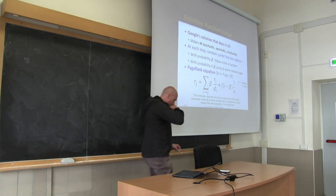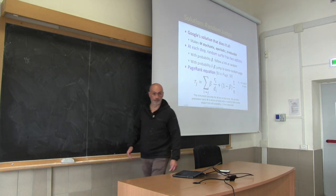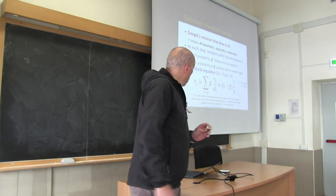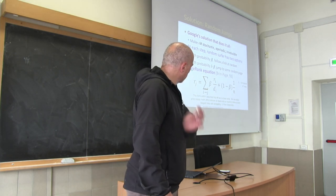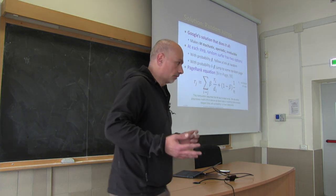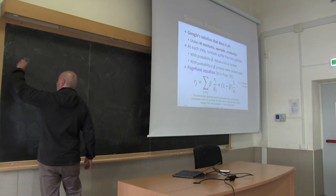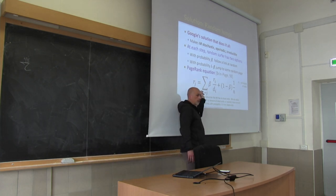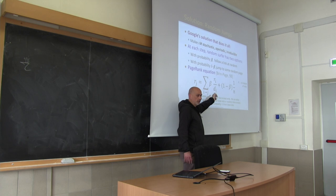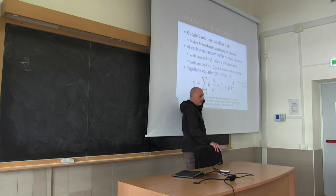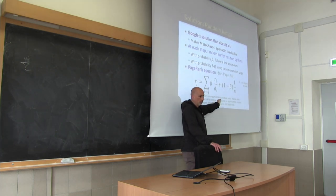Let us try to write this again in matrix or vector form. How does the vector computed at time t+1 depend on the vector computed at the end of the previous iteration? I want to know the probability distribution at time t given the probability distribution at time t minus 1. The transition matrix A was modified by removing dead ends.